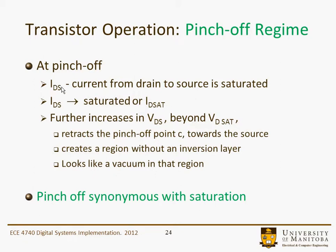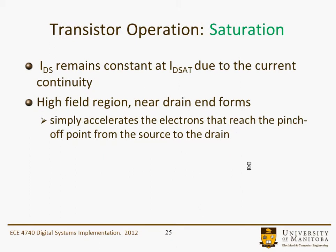At the pinch-off point, IDS — the current from drain to source — is called saturated, and we label it as IDSAT. Further increases in VDS beyond VDSAT basically retract the pinch-off point toward the source, creating a region without an inversion layer that looks like a vacuum in that region. Electrons traveling through that region effectively transport right through it. The pinch-off point is synonymous with saturation, or current saturation. In saturation, IDS remains constant at IDSAT due to current continuity.